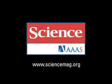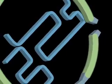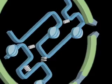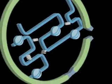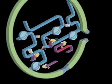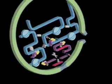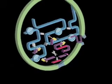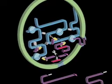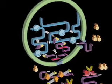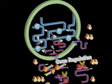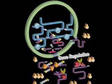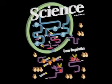Gene regulation can occur at many different levels. It can occur right at the beginning in the activation of the gene, in the DNA, in the genome, through the synthesis of the RNA, through its splicing, through export from the nucleus, through translation in the cytoplasm, through degradation of the RNA. All of these steps can be regulated, and in fact most of them are under different circumstances.